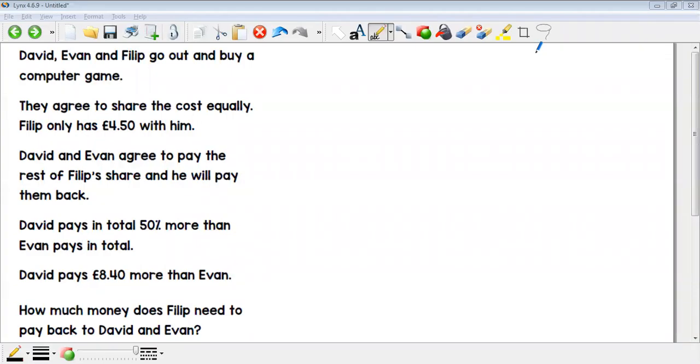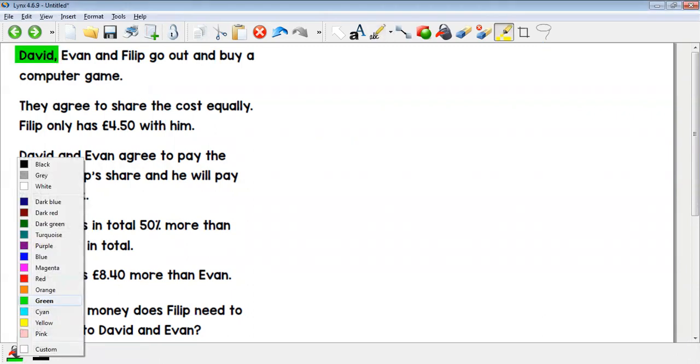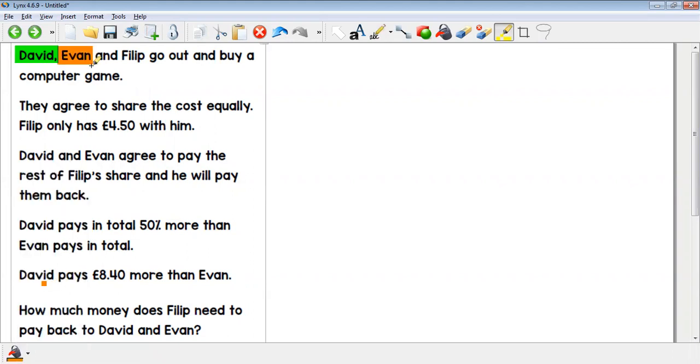Hi guys, just going to go through the challenge maths from today. This is a particularly tricky bar model question. As you can see, there's an awful lot of information, so we've got to figure out what's going on. David, Evan, and Philip go out and buy a computer game. They agree to share the cost equally. Philip only has £4.50 with him. David and Evan agree to pay the rest of Philip's share and he will pay them back.